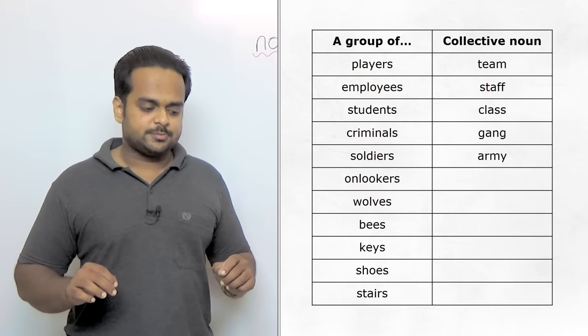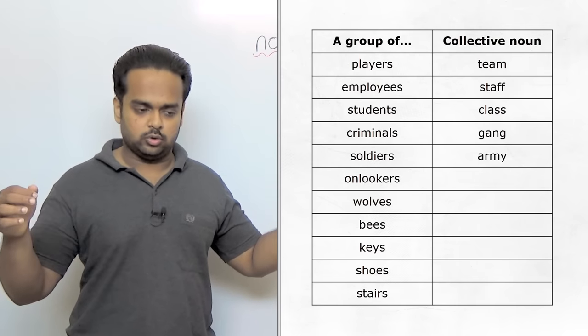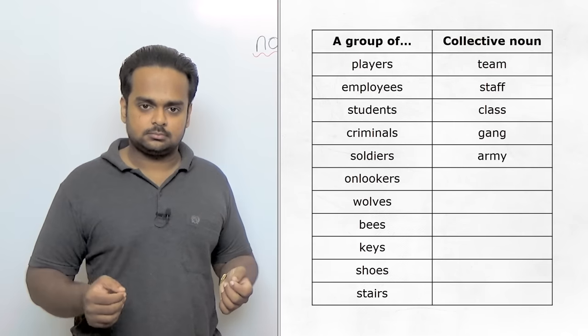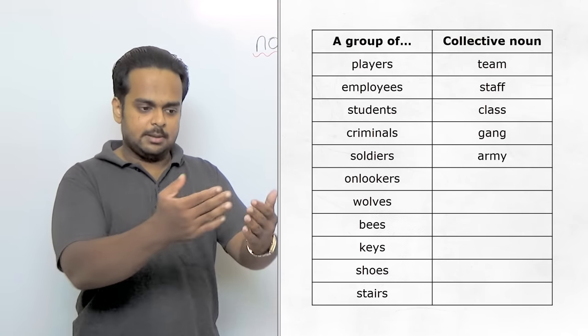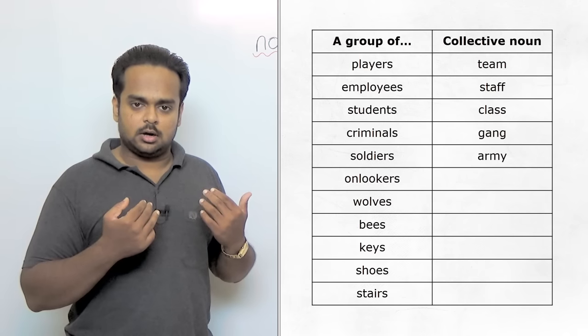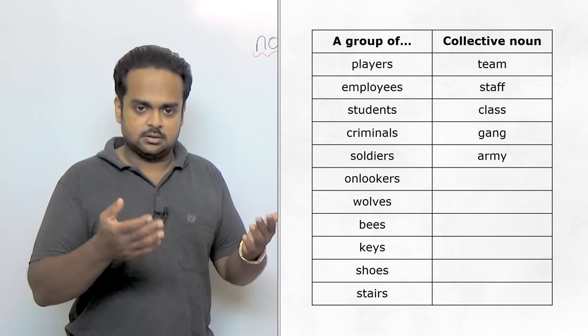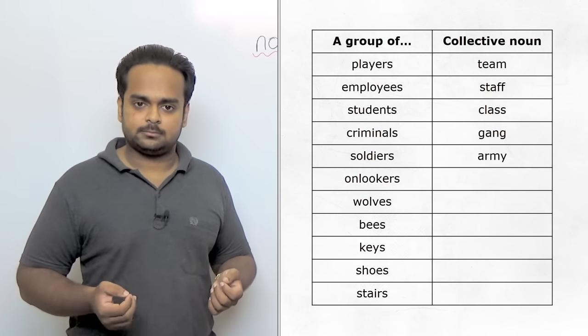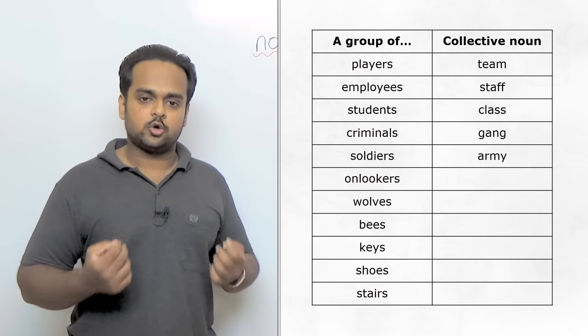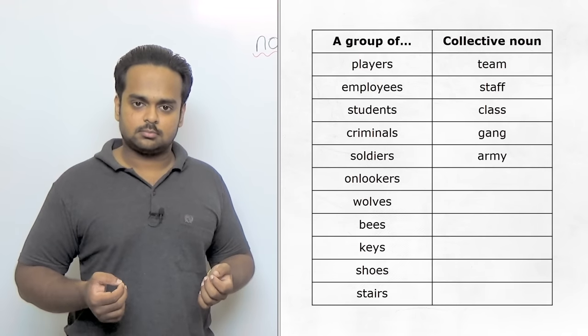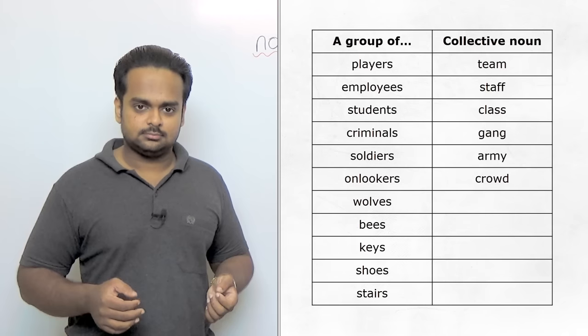What about a group of onlookers? Onlookers means, let's say there's been an accident on the road, like there's been a car crash. Onlookers are the people that stand around the scene and they want to see what's happening. So what do you call a group of onlookers? We call them a crowd. Did you get that one?